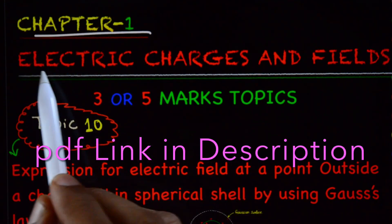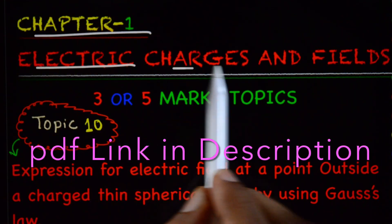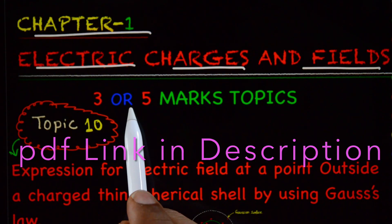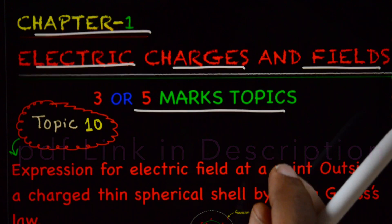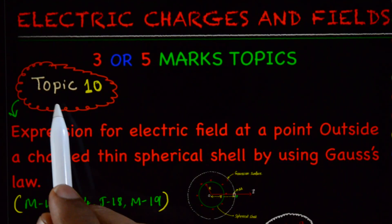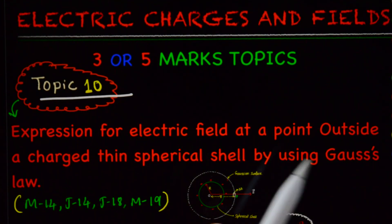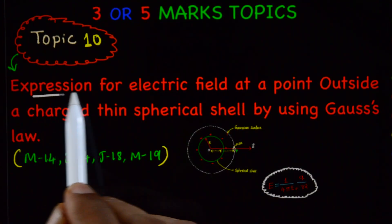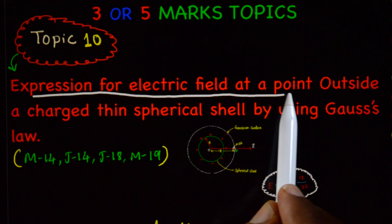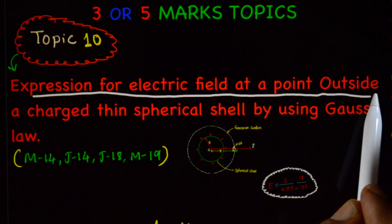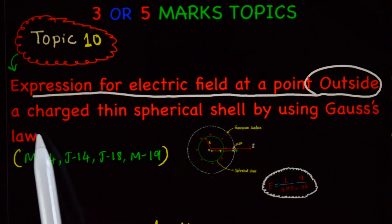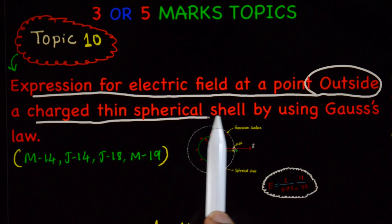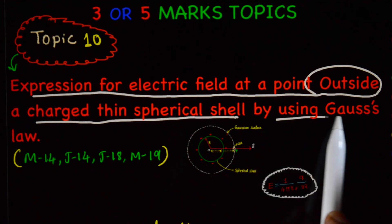Chapter 1: Electric Charges and Fields. This is a 3 or 5 mark long answer topic, topic number 10. We will derive the expression for electric field at a point outside a charged thin spherical shell using Gauss's law.